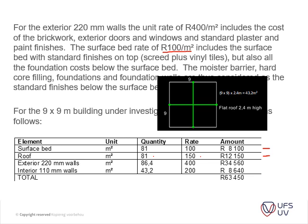The exterior walls are calculated as the perimeter times the height of 2.4 metres to get the square metre area, then multiplied by R400/m². The interior walls are 43.2m² multiplied by R200/m². Adding all elements together gives a total construction cost of R63,450.